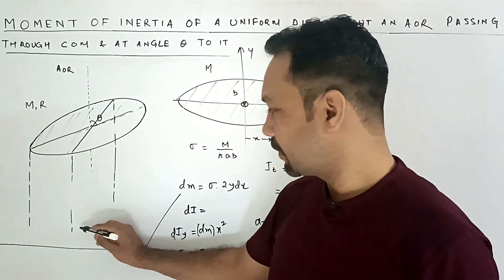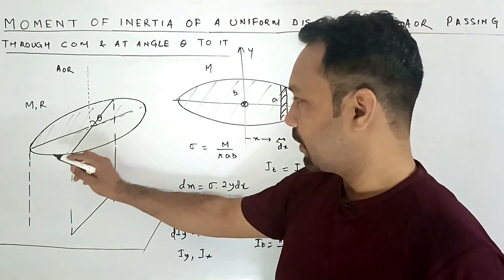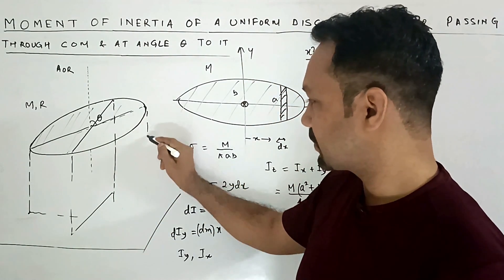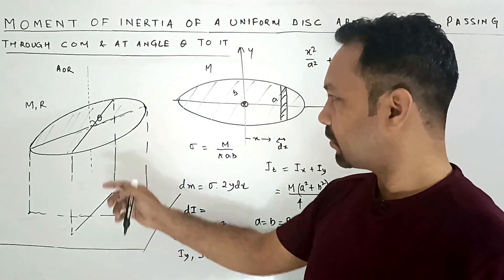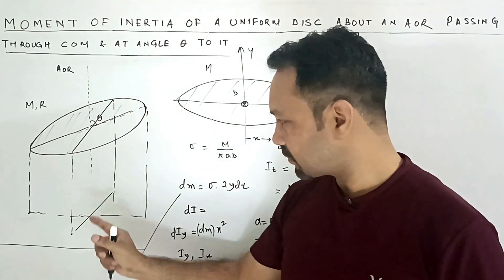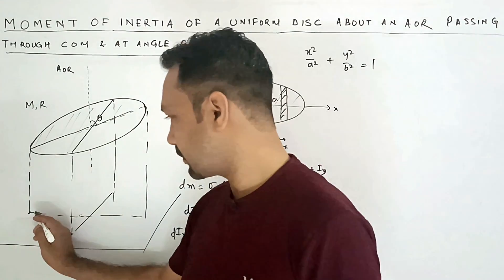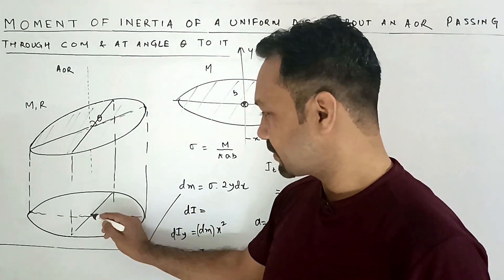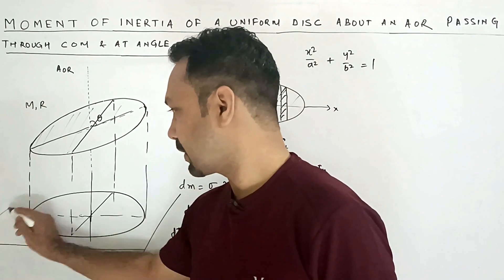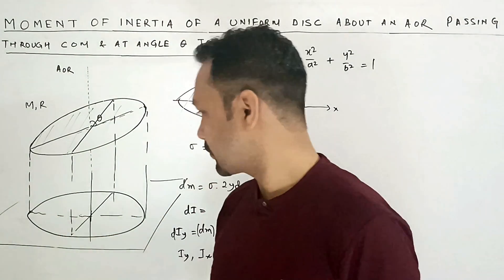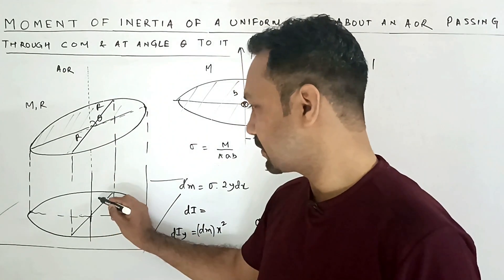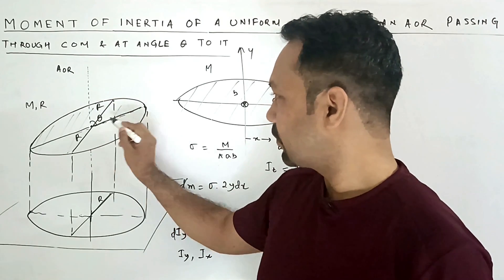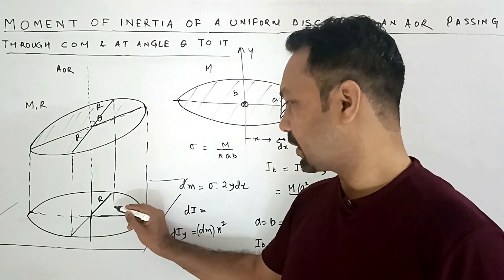The disk has radius r, so perpendiculars from each point of the disk fall onto the horizontal surface. The length across one direction stays 2r, but in the tilted direction the projection shortens. The projection of this tilted circular disk onto the horizontal surface is therefore an elliptical disk, with one axis equal to r and the other axis equal to r·sinθ.